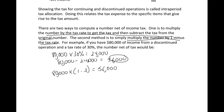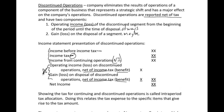That covers discontinued operations. The key things to know are the two components and how to calculate the number net of tax. The next lesson will look at a few more unusual items that you might have on your income statement, and the one following that will be an income statement example where we put some of this together. I'm hoping you're enjoying these — please stay tuned for the next one and feel free to subscribe to my channel. Thank you.